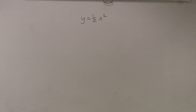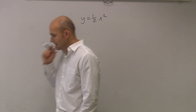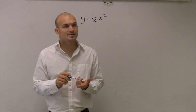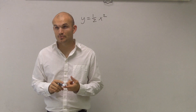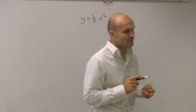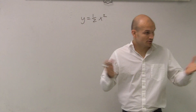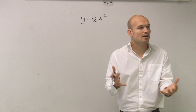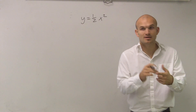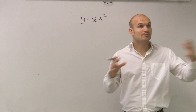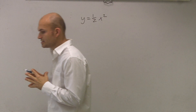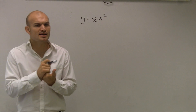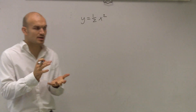For this problem, it says y equals one half x squared. What they want us to do is find the vertex, find the directrix, and find the focus. Those are the two main important points we've been talking about for our parabola — that focus and directrix — because that's what makes up the parabola, that equidistance. And then also we need to sketch a graph of the parabola.